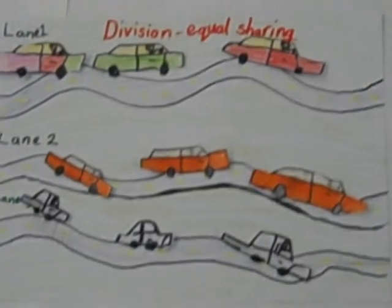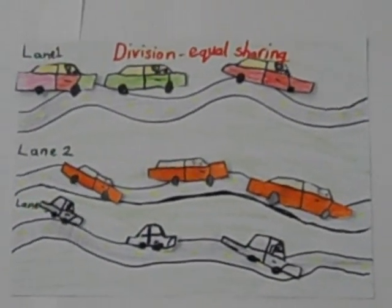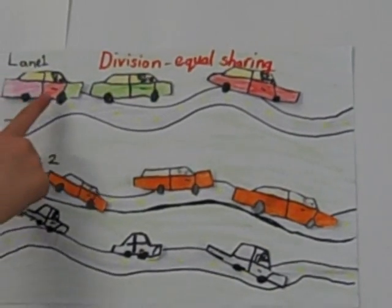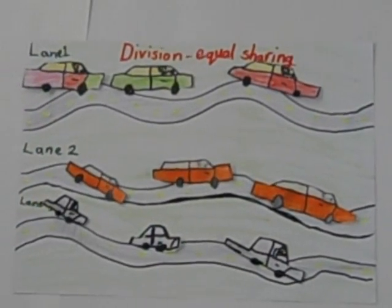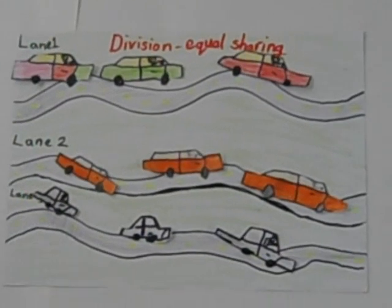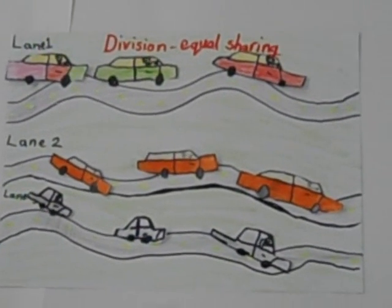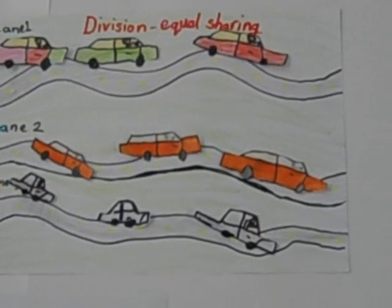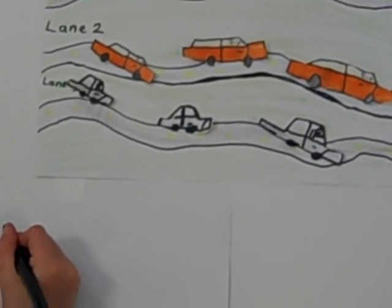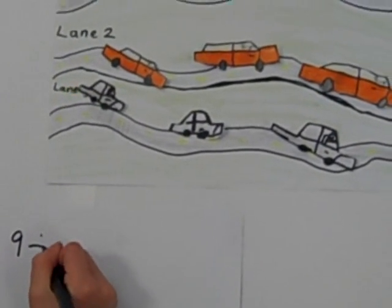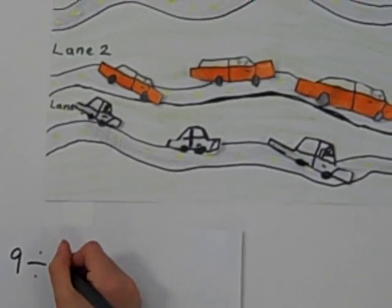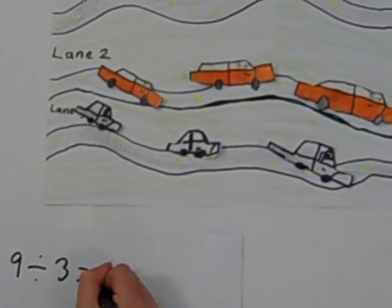We have got 3 in each group. Lane 1 has got coloured cars, lane 2 has orange cars and lane 3 has black cars. The sum is 9 divided by 3 equals 3.